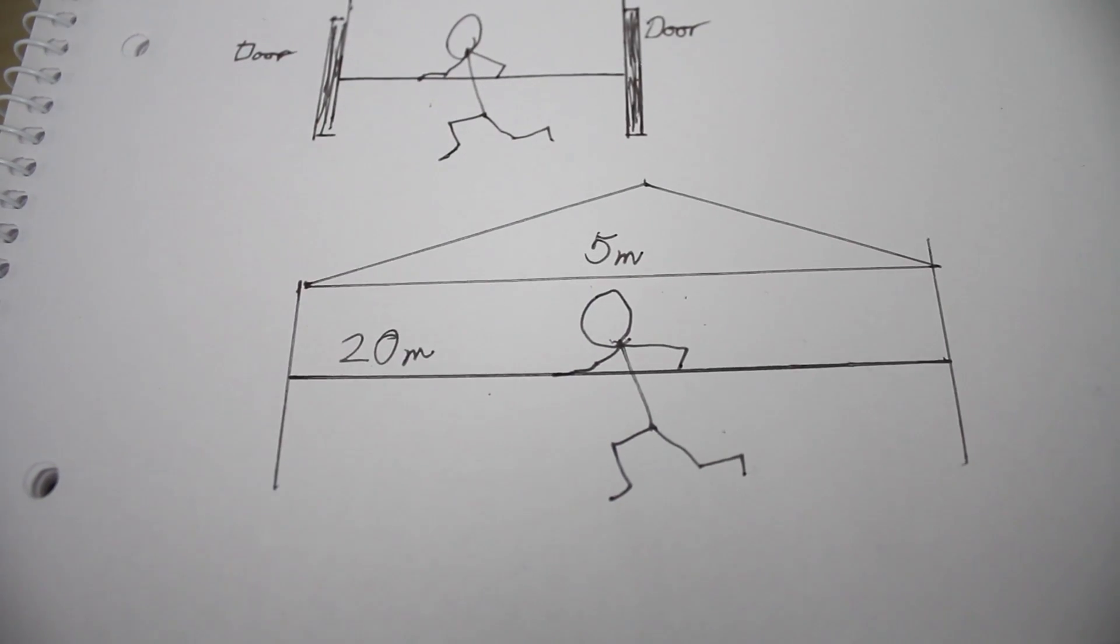Now for the girl the pole is still 20 meters long while the barn actually appears to be just 5 meters long. So how can that fit inside the barn? There's some kind of paradox here. So I'll let you wonder about that for a second while I'll go get some dinner.